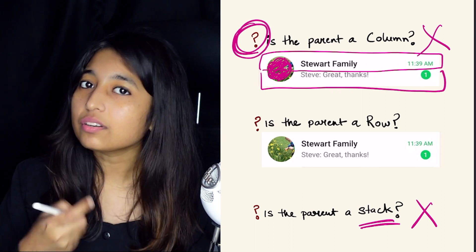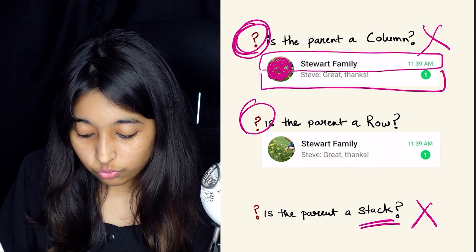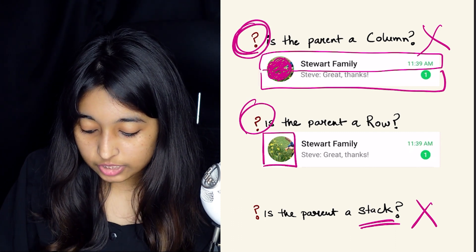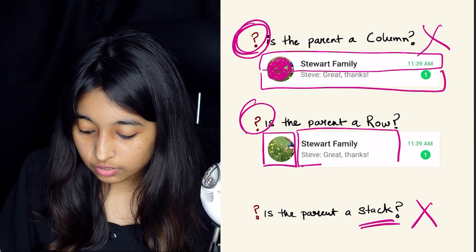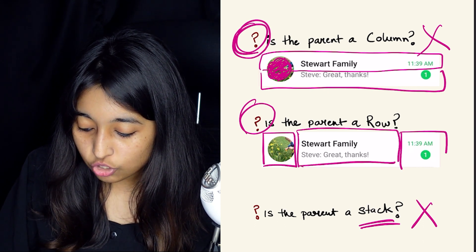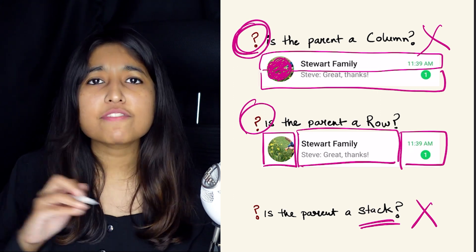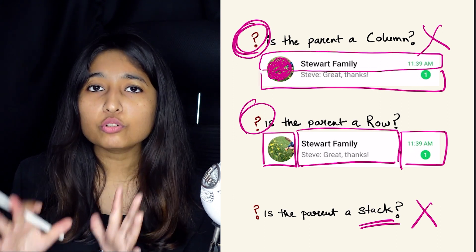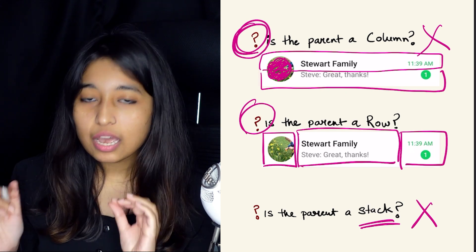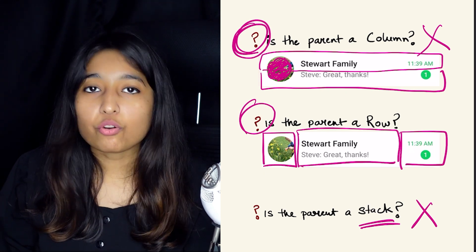Now let's see if the parent is a row. How can we divide this into row children? Maybe this could be the first element, maybe this could be the second child, and this could be the third element or child. And that fits perfectly. We are able to break that down into three children and the parent widget seems to be a row here. So this is perfect.